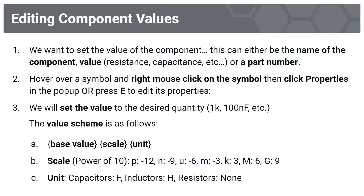To edit component values, hover over a symbol, right-click, and click Properties — or press E. Set the value to the desired quantity such as 1K or 100nF. The value scheme is: base value, followed by scale (power of 10), followed by unit. The scale can be P for pico (10⁻¹²), N for nano (10⁻⁹), and so on.